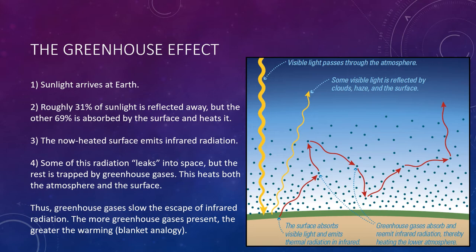Think of a blanket: you stay warm under a blanket not because the blanket itself is providing heat, but because it's trapping or slowing the escape of your body heat into the cold outside air. This is the same idea. The warming caused by the greenhouse effect gives our planet the moderate temperatures needed for the existence of life. But for more than a century, our technological civilizations have been adding more and more greenhouse gases to the atmosphere at an unprecedented rate — in other words, we're adding more and more blankets, trapping the heat more and more. And this is a problem.